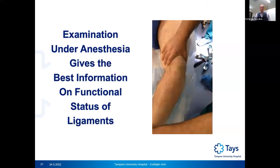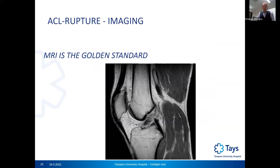For imaging, MRI is the gold standard for ACL diagnostics. You can see the classical signs of ACL rupture on MRI, but not on X-rays.